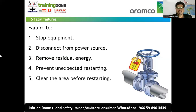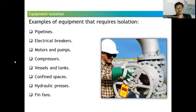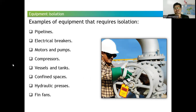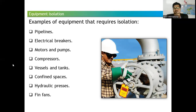Examples of equipment that typically require isolation include pipelines, electrical breakers, motors, pumps, compressors, valves, tanks, confined spaces, hydraulic presses, and fin fans. In this video, the focus will mostly be on pipelines, vessels, tanks, confined spaces, and fin fans.